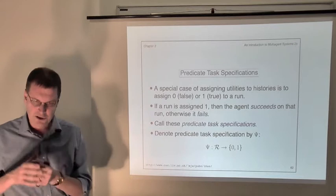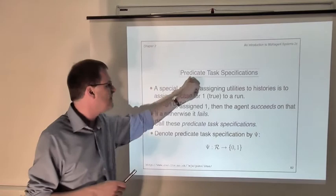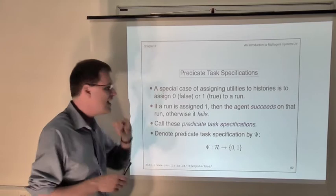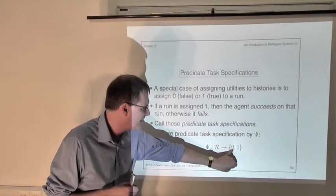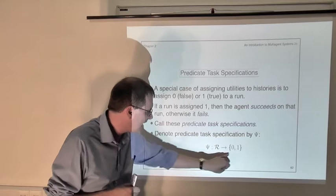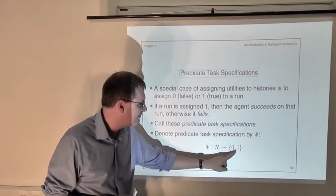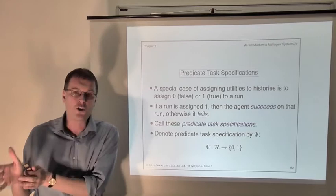So we've seen two types of utility functions: utility functions over environment states, and utility functions over runs. Let's now introduce a special case of utility functions over runs called predicate task specifications. A predicate is just something that's true or false. The idea of a predicate task specification psi is that it looks at a run and simply says whether that run is a bad one, giving it value 0, or a good one, giving it value 1. So these are special cases of utility functions over runs where the range is just the set {0, 1}.